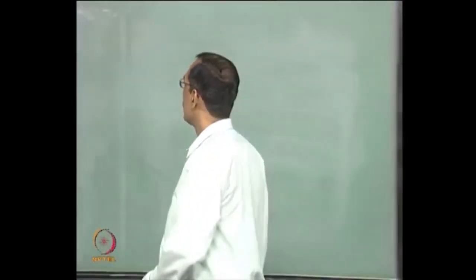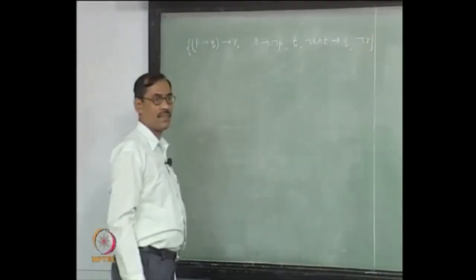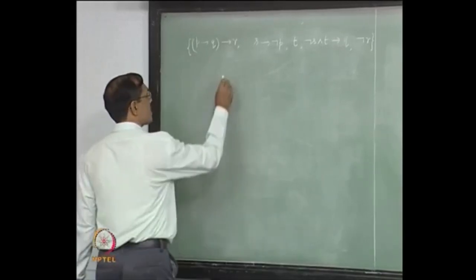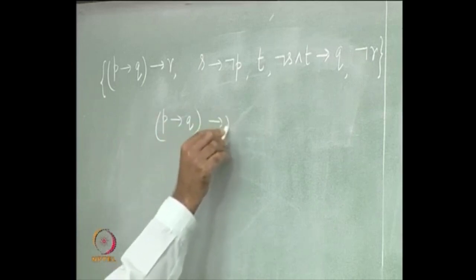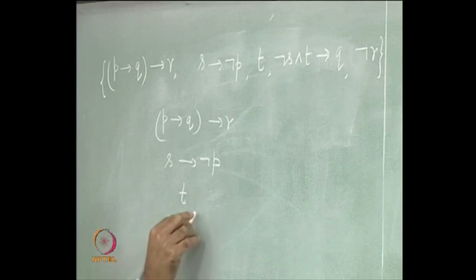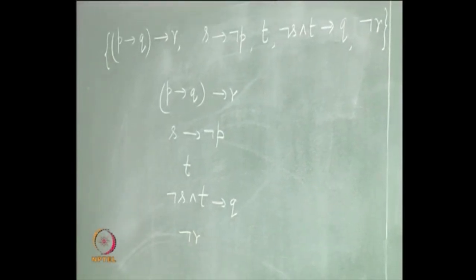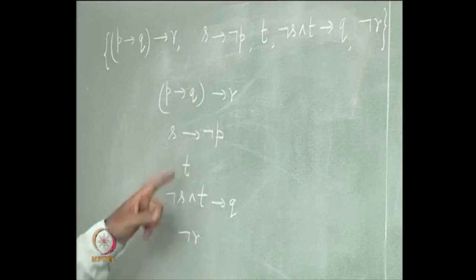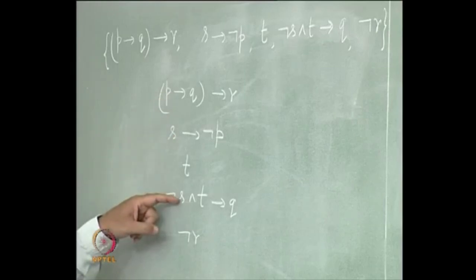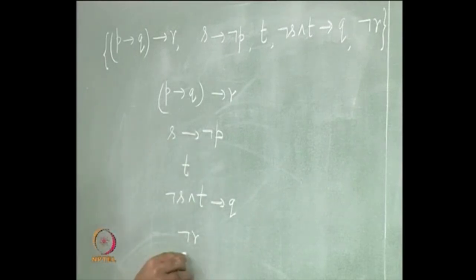Let us see one more example. This set is inconsistent, so we will be constructing a tabula for it. We start with all of them at the root, then go on applying the tabula rules. I see 'not r' and 'not t' — they are already literals. There are three others which are compound propositions on which tabula rules can be applied, and all of them are branching. So any one of them I can choose and proceed. Let me choose this one — it is smaller. This gives two branches: one is 'not s', another is 'not b'.